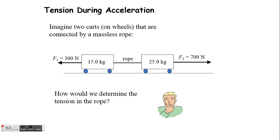Imagine we've got these two carts on wheels connected by a massless rope. We're assuming there's no friction in the wheels or axles or anything else, so the only forces that work in this situation are the little tug of war we've got right here. The question we have to ask ourselves is: how would we determine the tension in the rope?